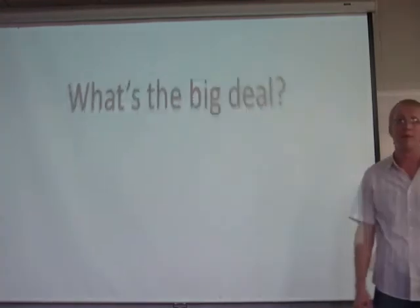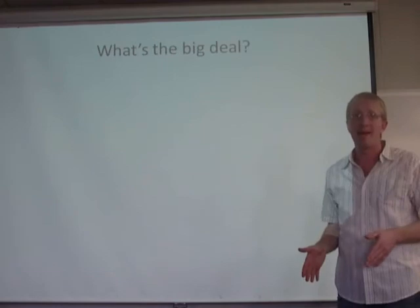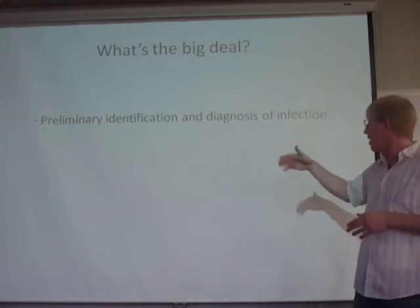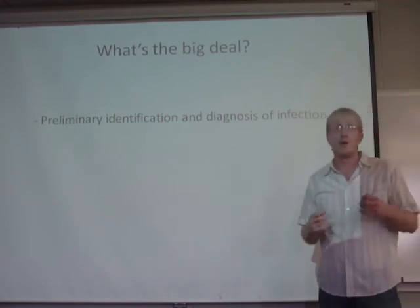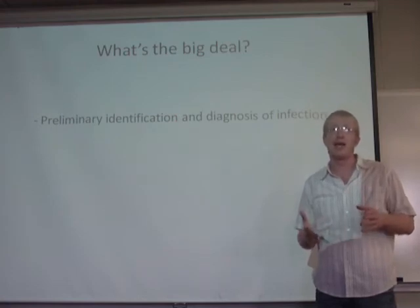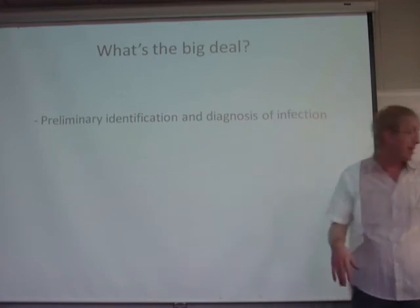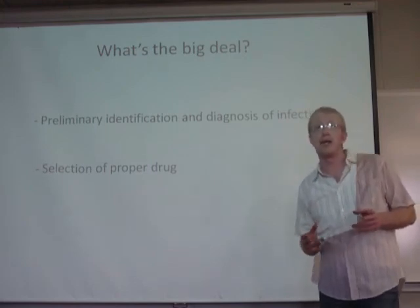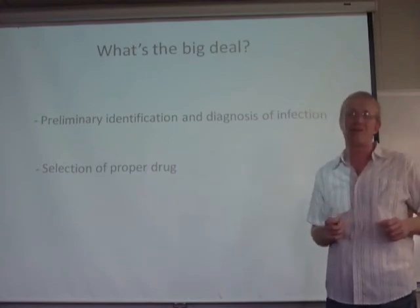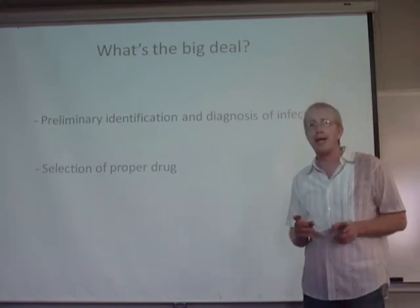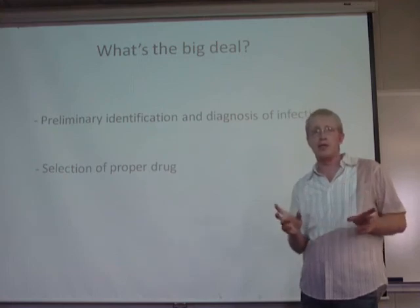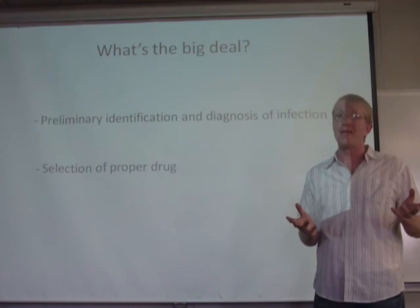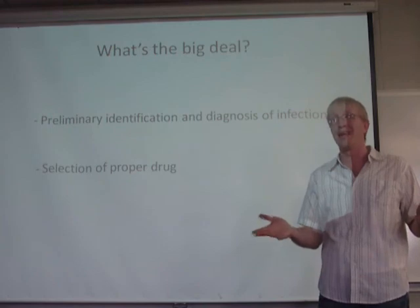Why does it matter whether bacteria are gram positive or gram negative? This identification is used in the preliminary diagnosis of bacterial infections. For example, a urine or saliva specimen can be stained, and based on the result, it influences the type of medication prescribed. Penicillin, for instance, disrupts the peptidoglycan linkages of gram positive cell walls but cannot penetrate the outer membrane of gram negative bacteria. So if the bacteria are gram positive, penicillin is effective, but for gram negative bacteria, a broader spectrum of drugs such as synthetic penicillin like ampicillin is required.